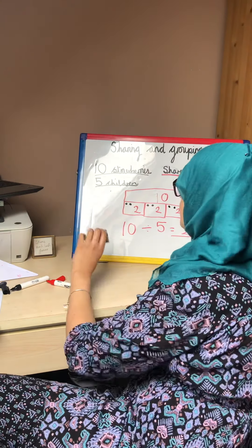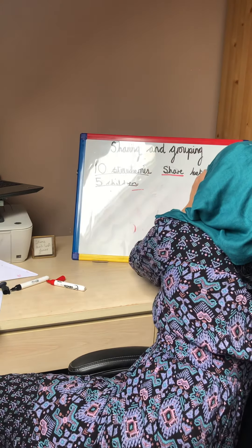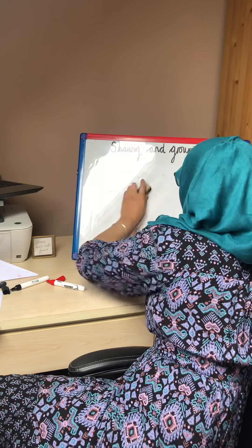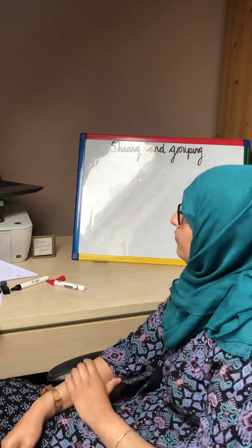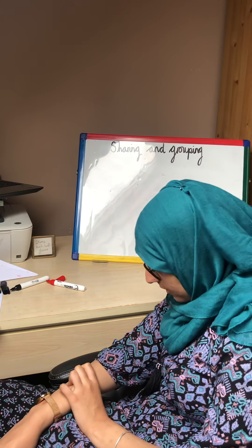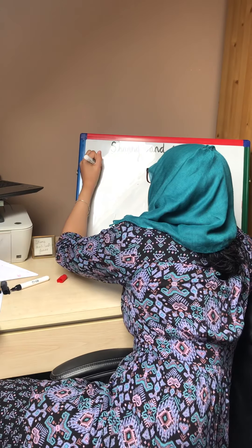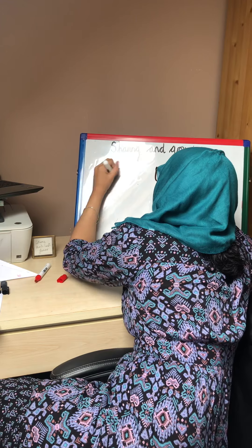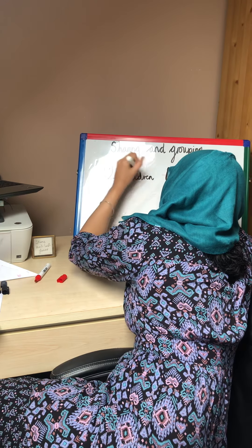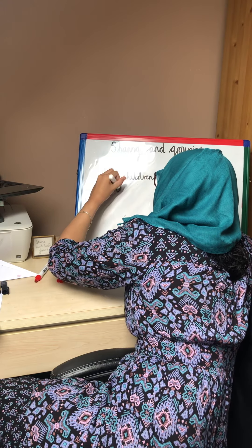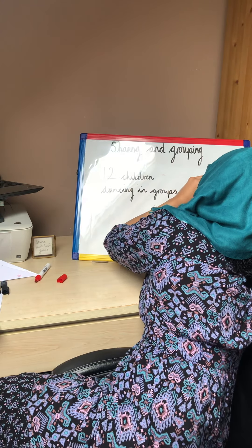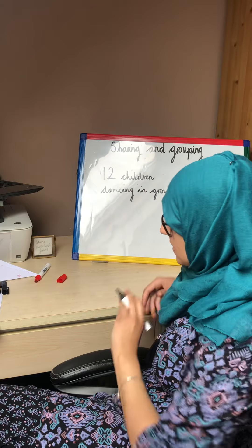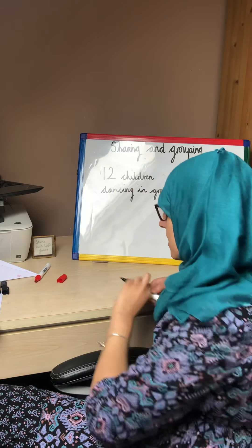Next question. Again, we're going to check: is it a grouping question or a sharing question? My next question: I have 12 children dancing in pairs, or groups of two. How many groups are there? So: 12 children dancing in groups of two — how many groups have I got? Is it a grouping or sharing question? Yes, it is a grouping question.